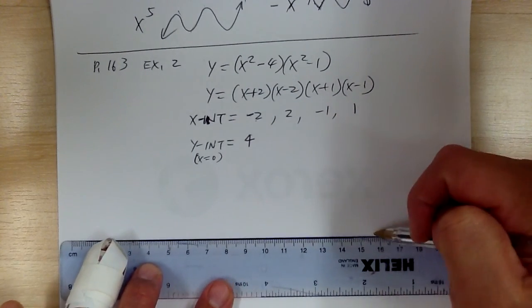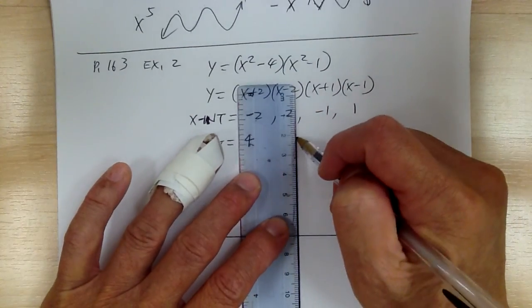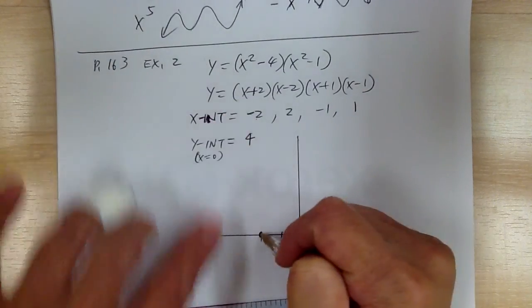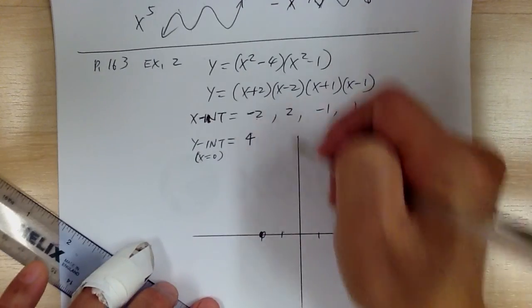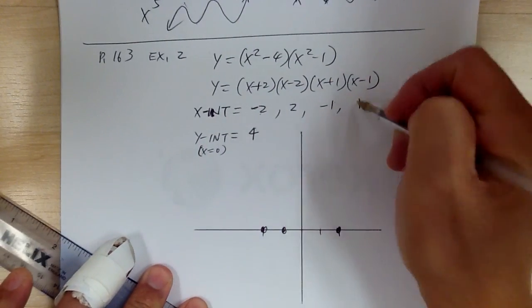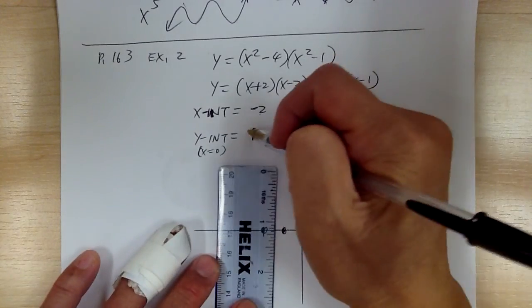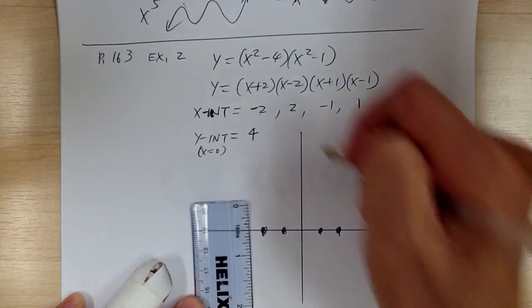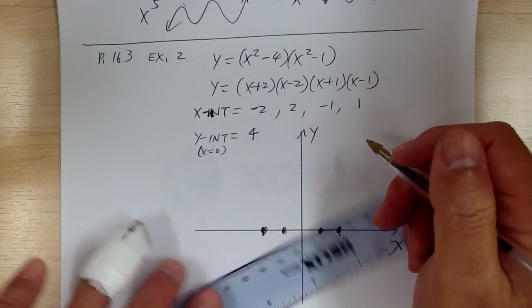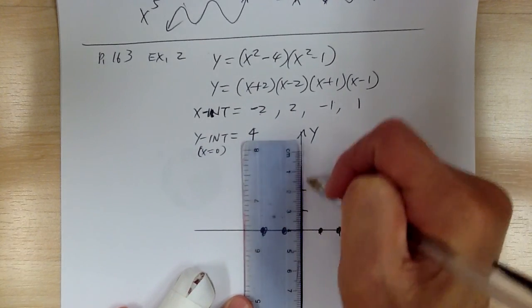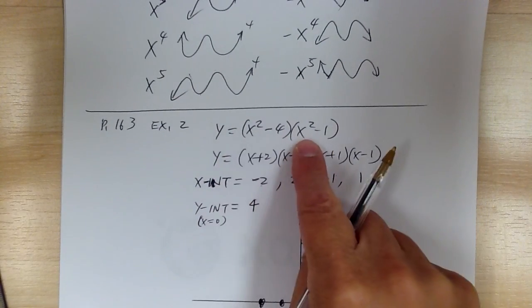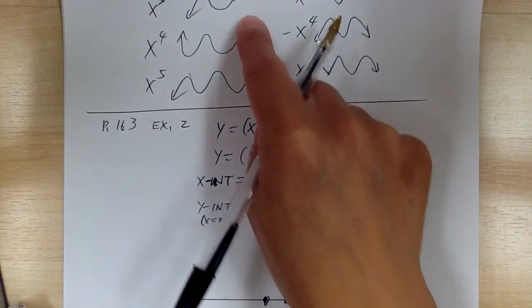Now let's go ahead and do the sketching. You have x-intercepts at -2, +2, -1, and +1, and the y-intercept at 4. Notice you have x squared times x squared, which gives x to the fourth power — so the graph looks like a W. It's the fourth degree.